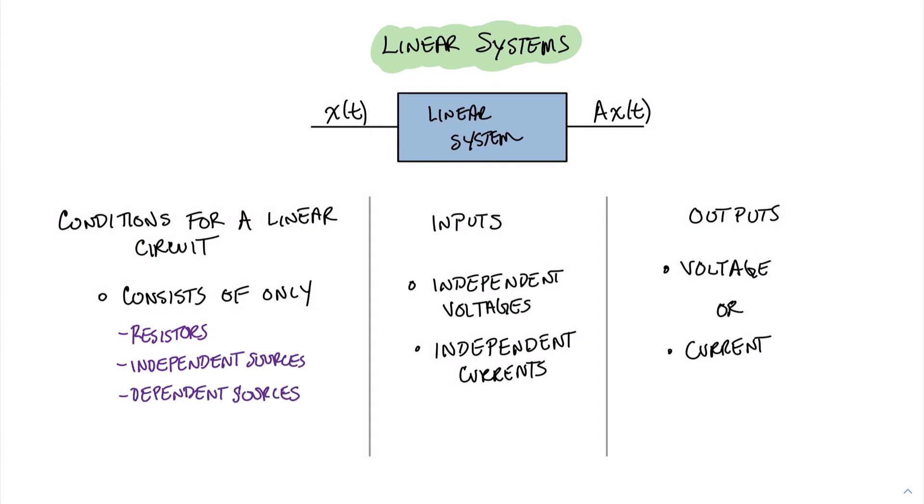When we say that this particular system has inputs, when it comes to a linear resistive circuit, what we mean by that is that the inputs are either the independent voltages or the independent current sources. And when we say outputs, what do we mean by that? Well, we're looking at the voltage across some element in the circuit or the current through an element in the circuit.